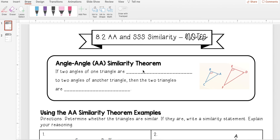Today we're going to continue our discussion on similarity by learning two new theorems. The first one is called angle-angle, or for short AA, similarity theorem. What that tells us is that if two angles of one triangle are congruent to two angles of another triangle, then the two triangles are similar.